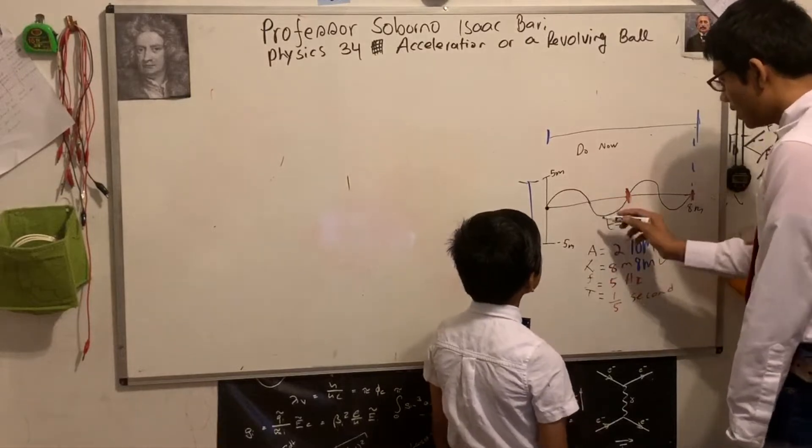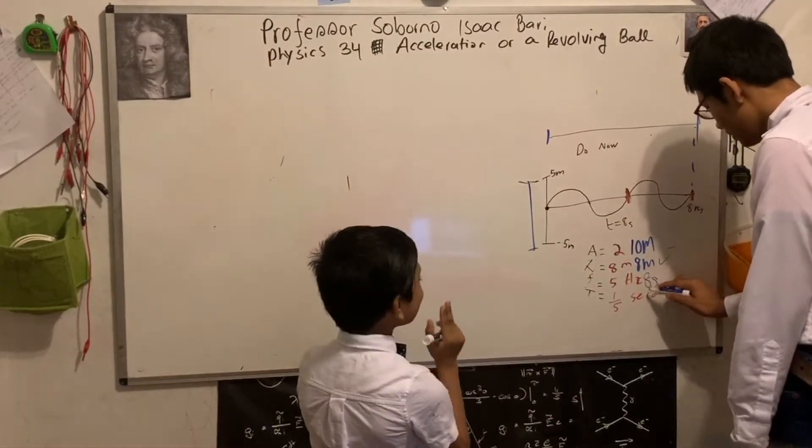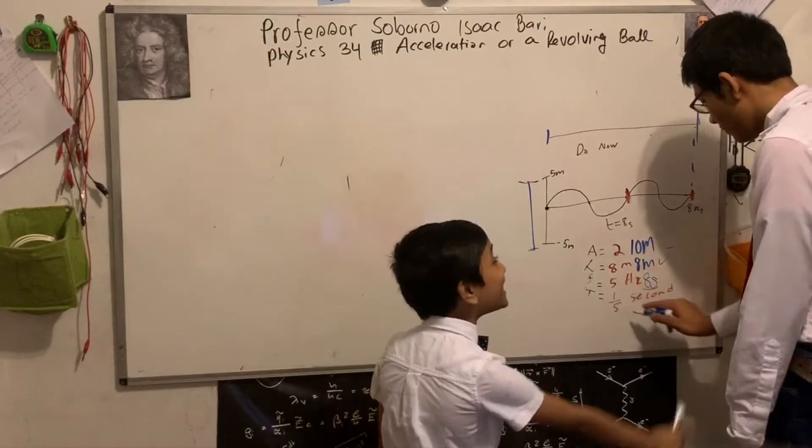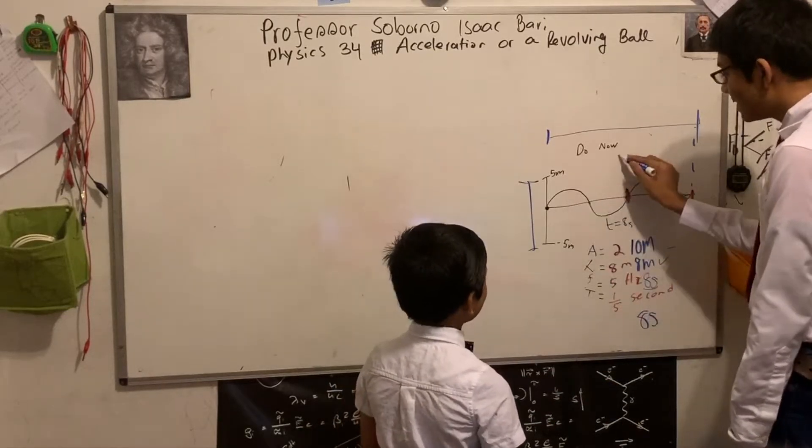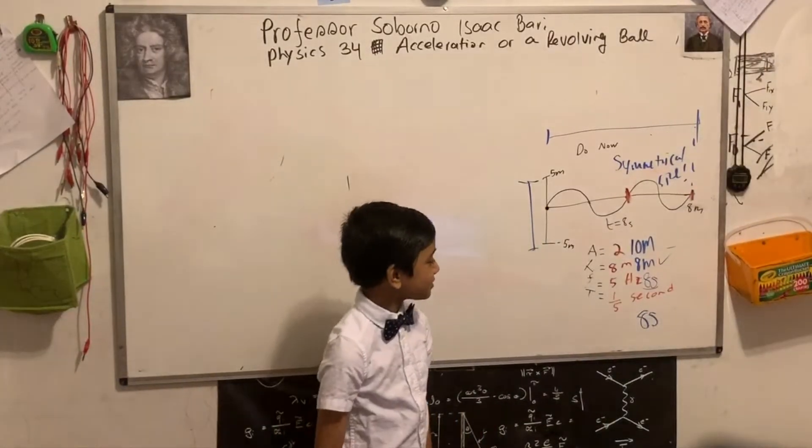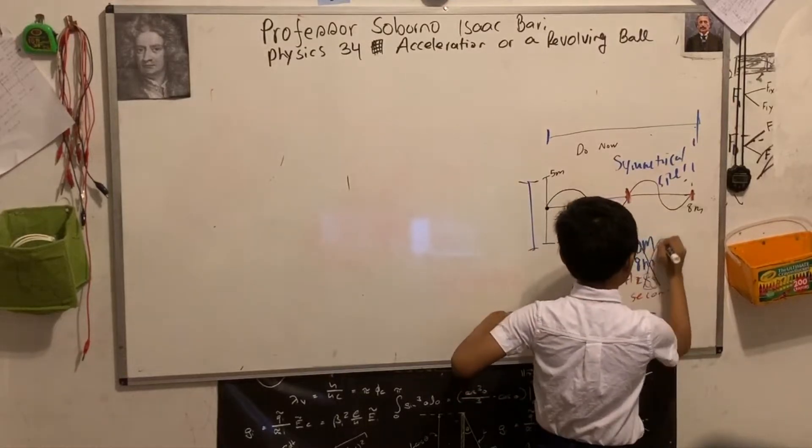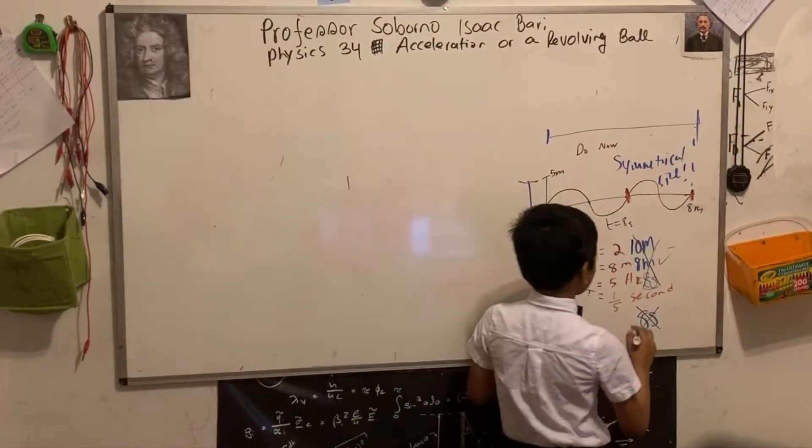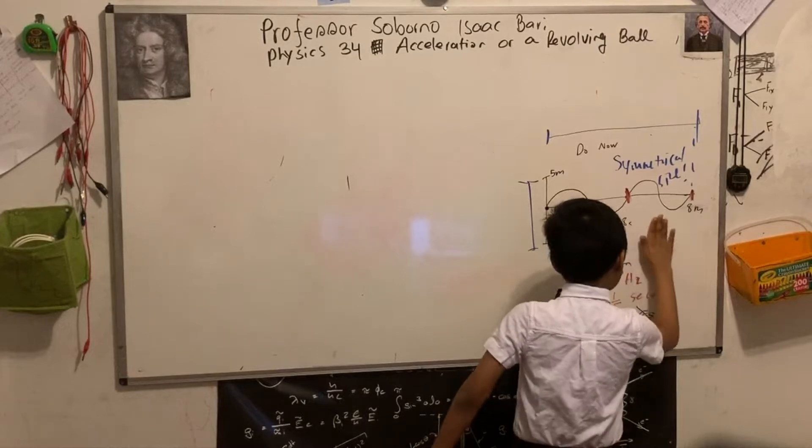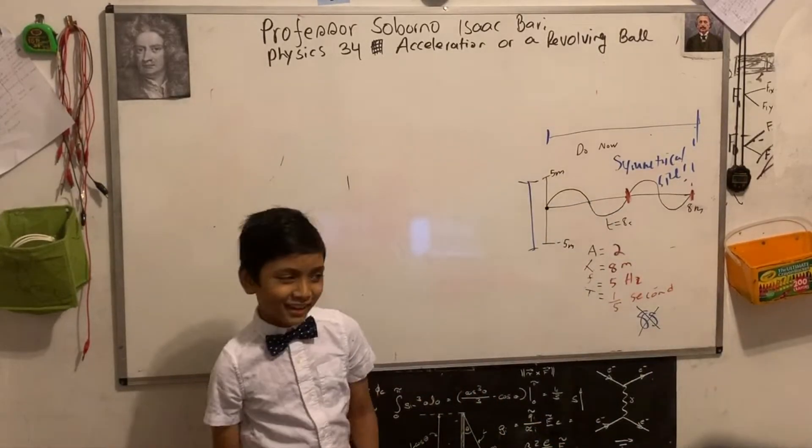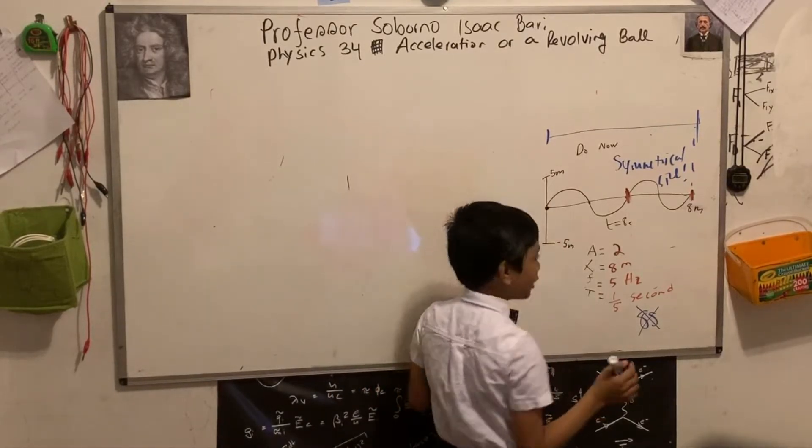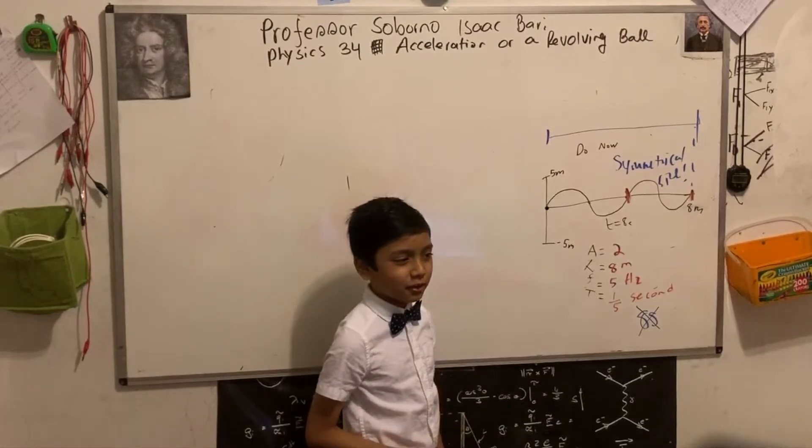Frequency is going to be eight seconds. This is terrible - he didn't even input the right unit. Period is going to be the same as frequency because this is a symmetrical sign function. This guy, he is in physics class. You are all wrong.